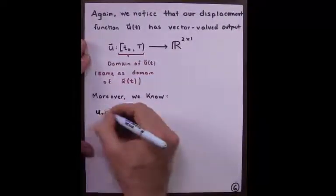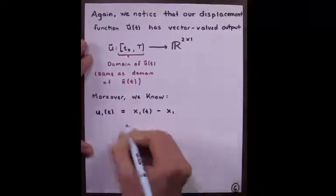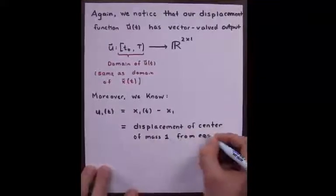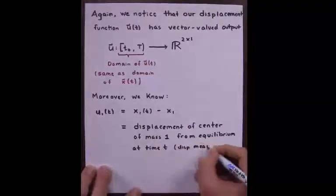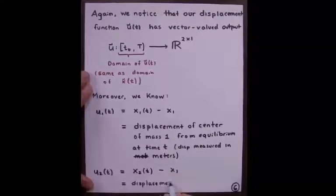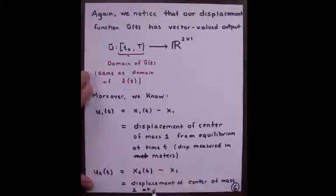we know that u1, given by x1 minus x naught, is the displacement of the center of mass 1 from equilibrium at time t, measured in meters. u2 is the displacement of center of mass 2 away from its equilibrium position at time t.